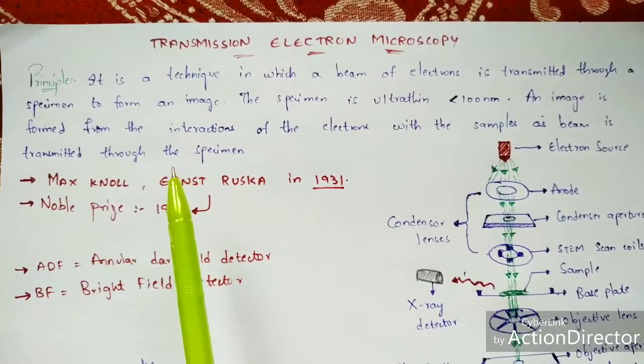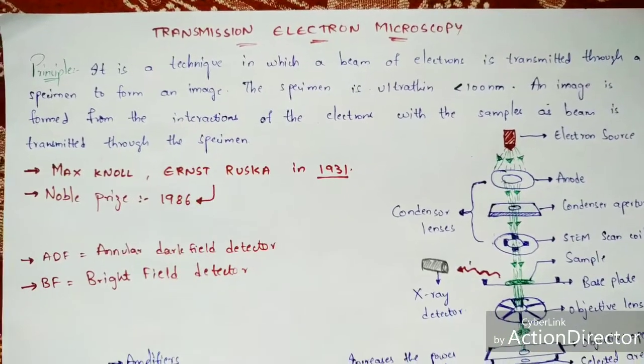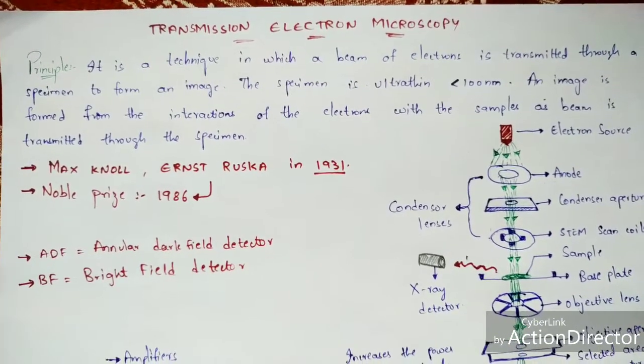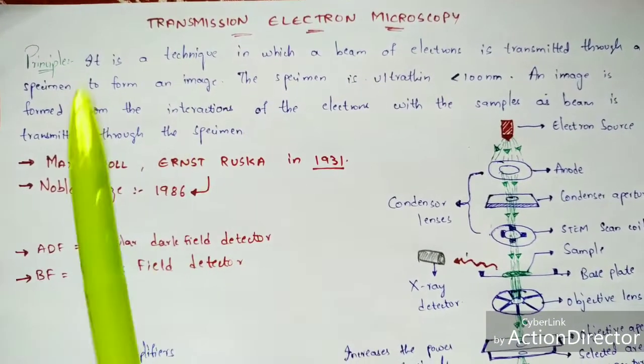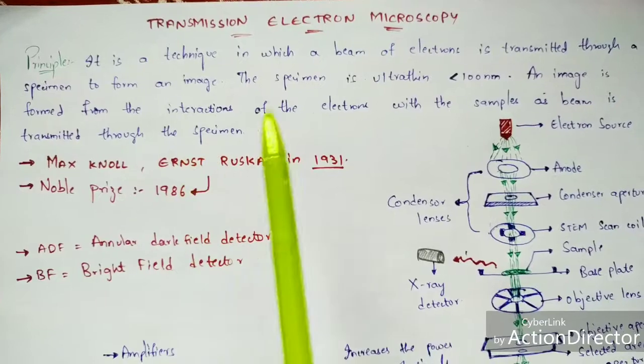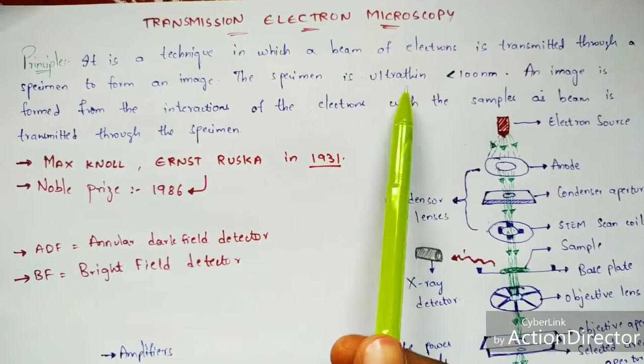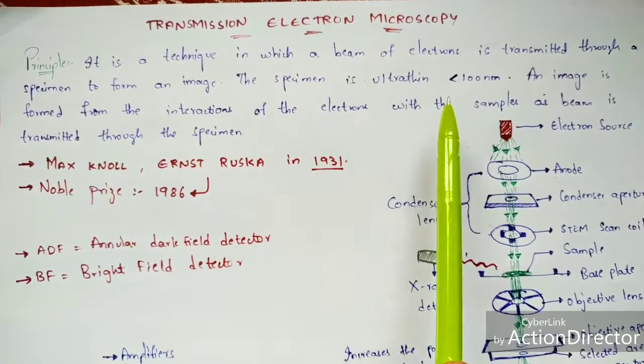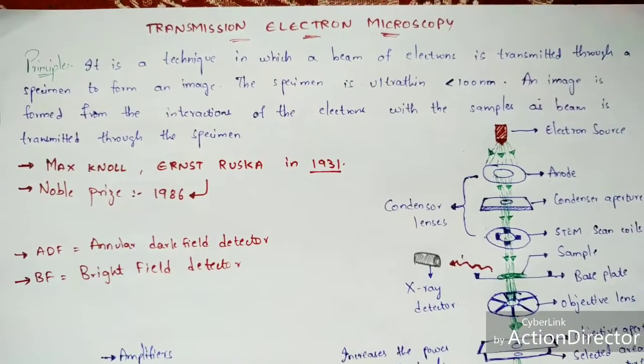One important thing to remember is that the specimen which you place in the base plate of the electron microscope should be ultra thin — less than 100 nanometers.